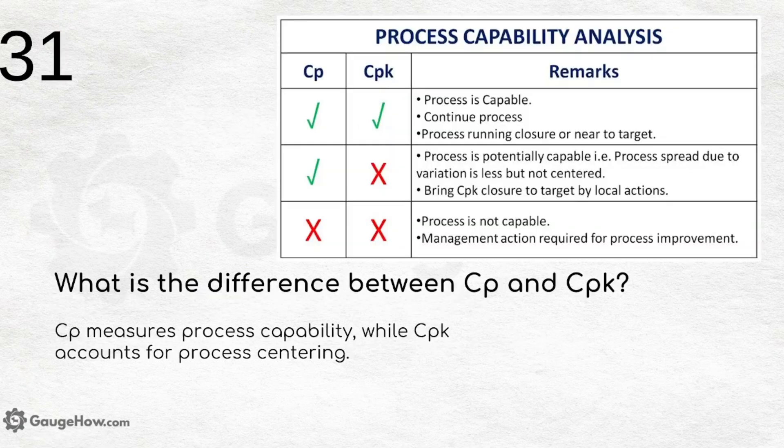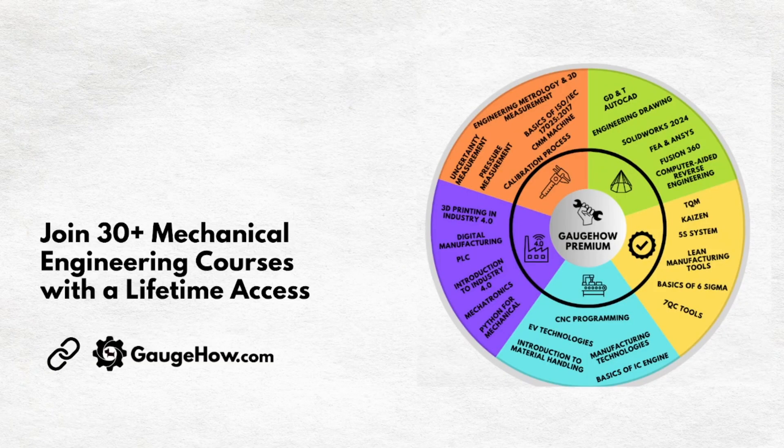What is the difference between Cp and Cpk? Cp refers to process capability, while Cpk accounts for process centering. Process capability analysis shows remarks such as whether the process is capable or whether it should be continued.